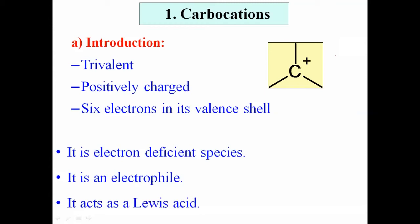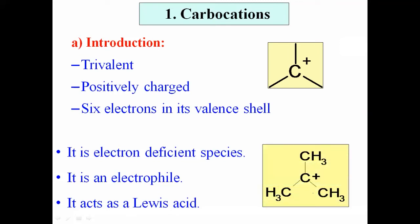What do you mean by Lewis acid and base? If any substance donates an electron pair, it is called a Lewis base. The carbocation has a tendency to accept an electron pair, and therefore it is a Lewis acid. In summary, the definition of carbocation is: the trivalent, positively charged carbon species which has six electrons in its valence shell. Its properties are: it is electron deficient, it is an electrophile, and it acts as a Lewis acid. A simple example is a central carbon attached to three methyl groups with a positive charge.